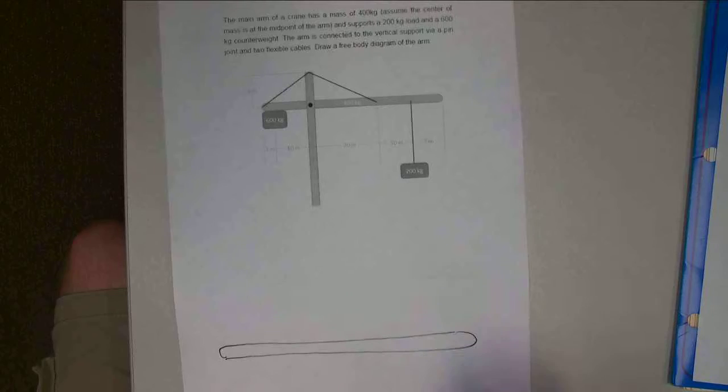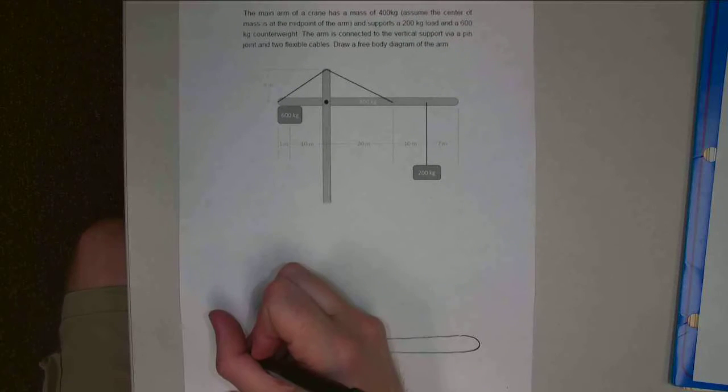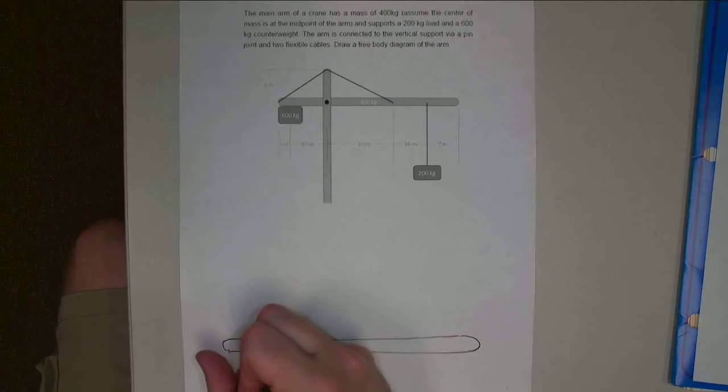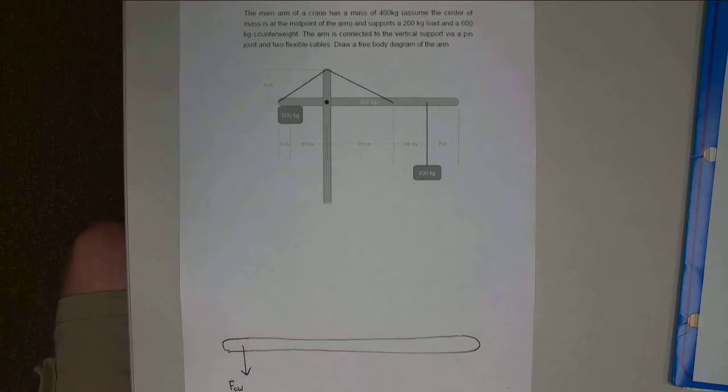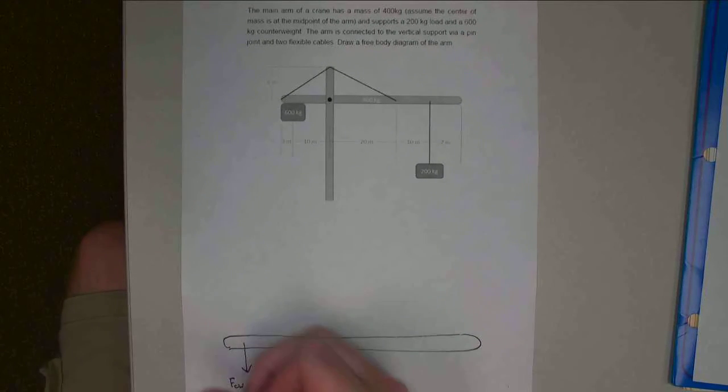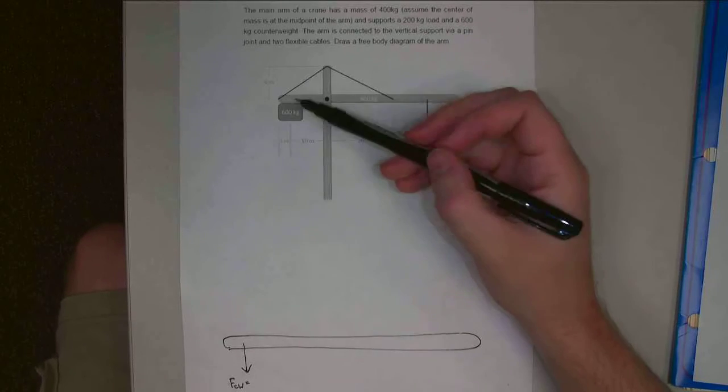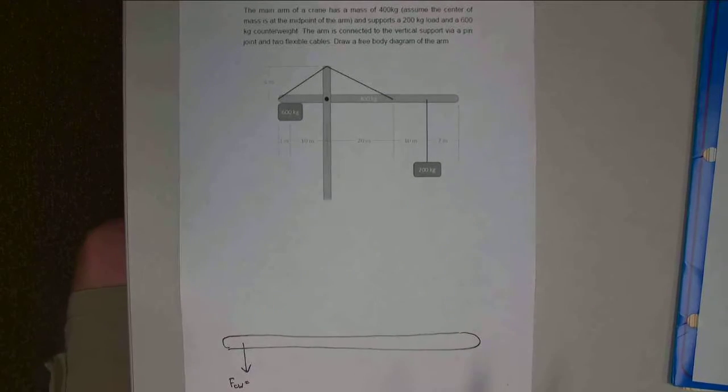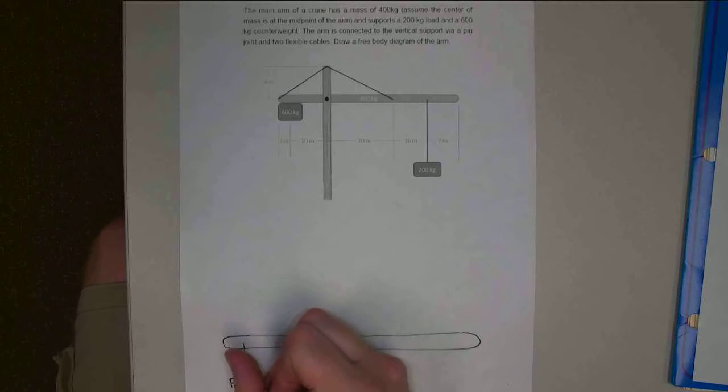Alright, so I've got this counterweight on one end. And the magnitude of that counterweight force is going to be 600 kilograms times 9.81. I need to convert everything into newtons. So 600 times 9.81.